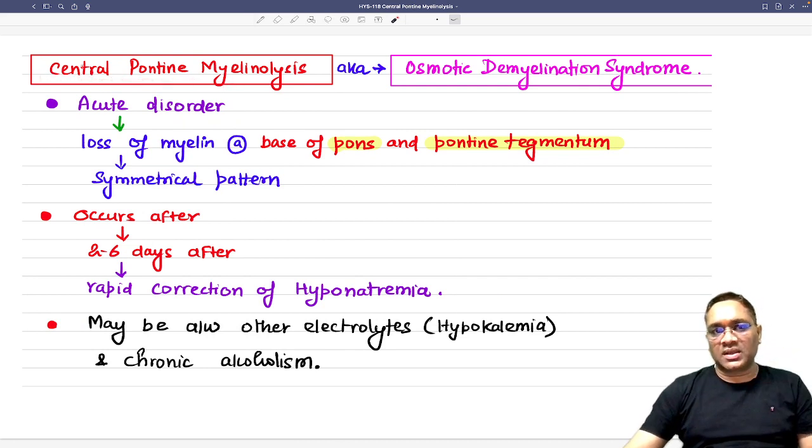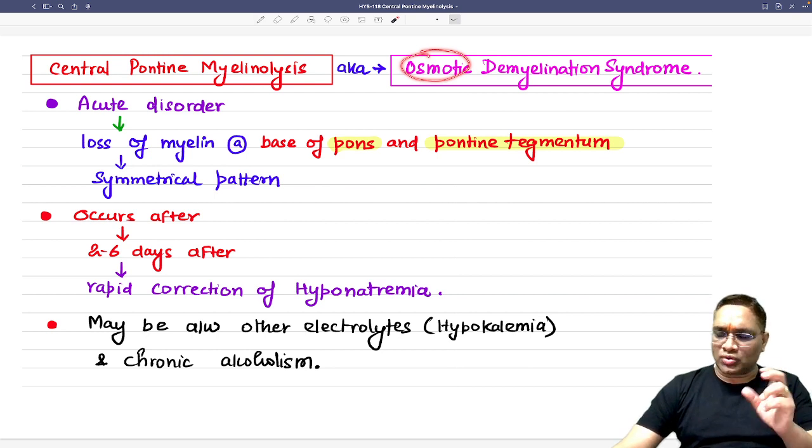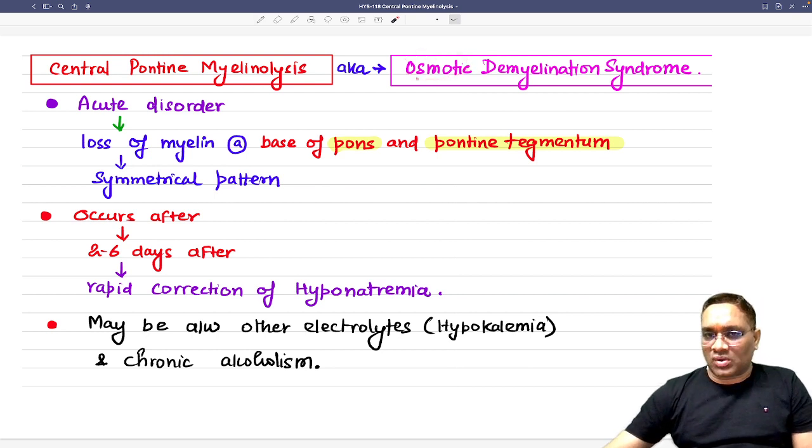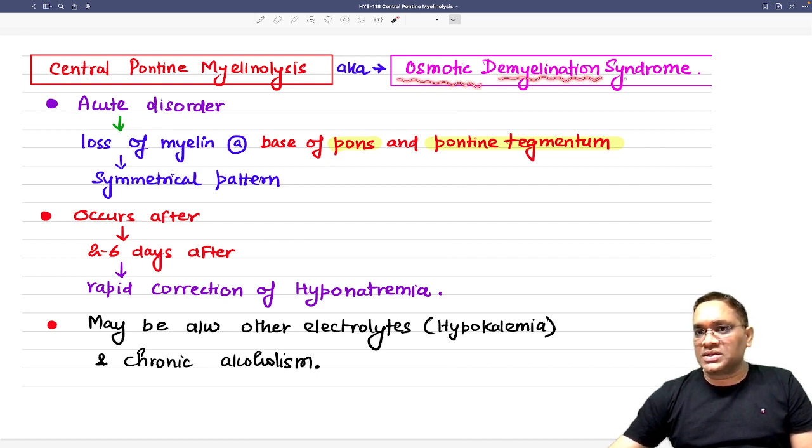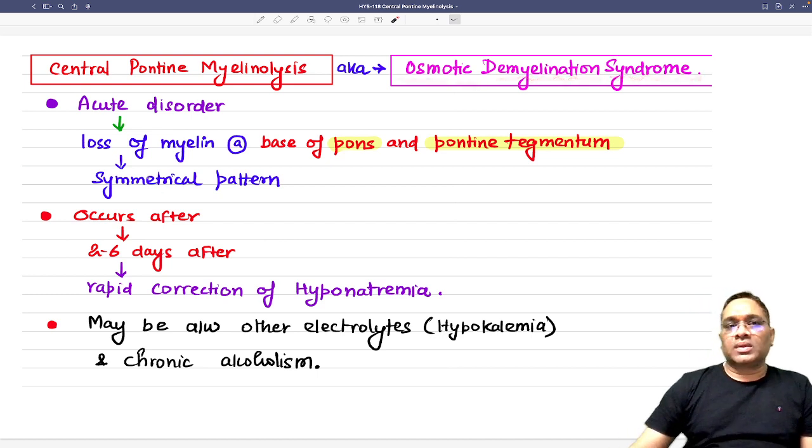The name itself is telling - it is the pons which will be affected and what will happen here is myelin will be lysed or myelin will be damaged. What will be the reason for this myelin damage? Because of the osmotic concentration of the sodium, most commonly. That is why it is also known as osmotic demyelination syndrome.